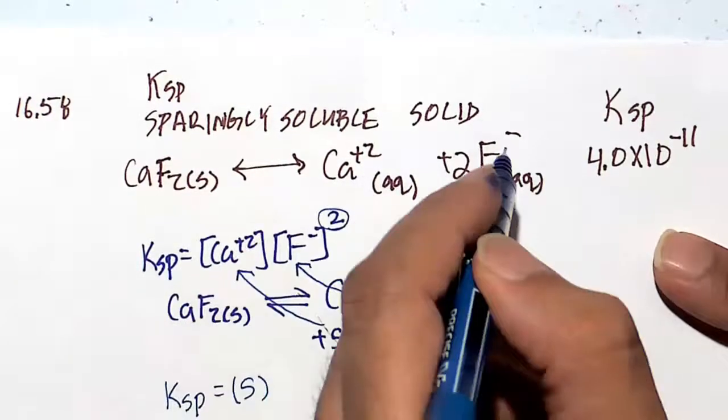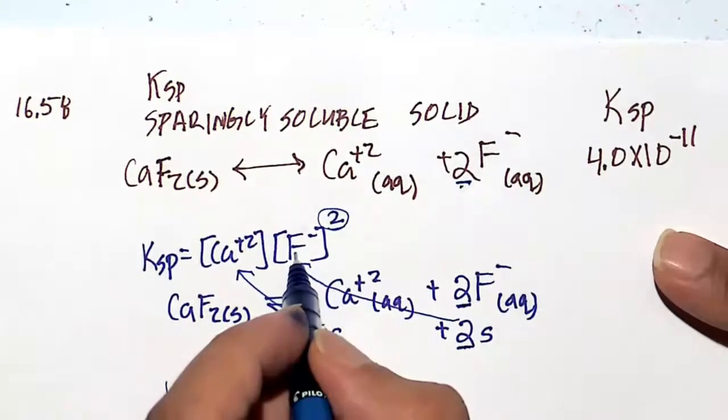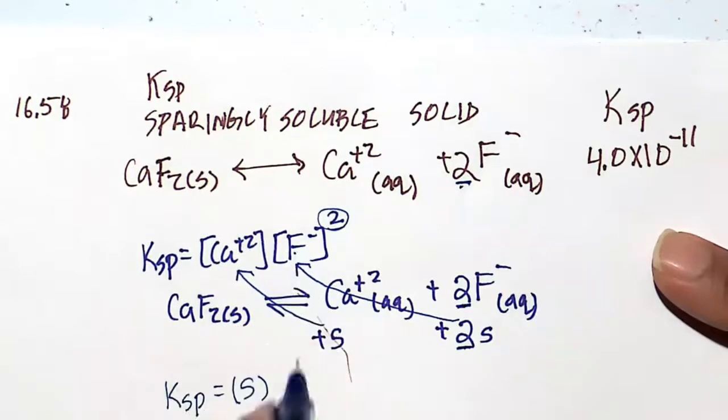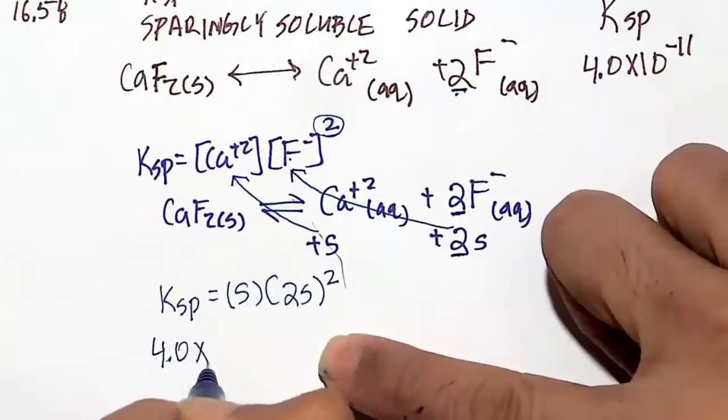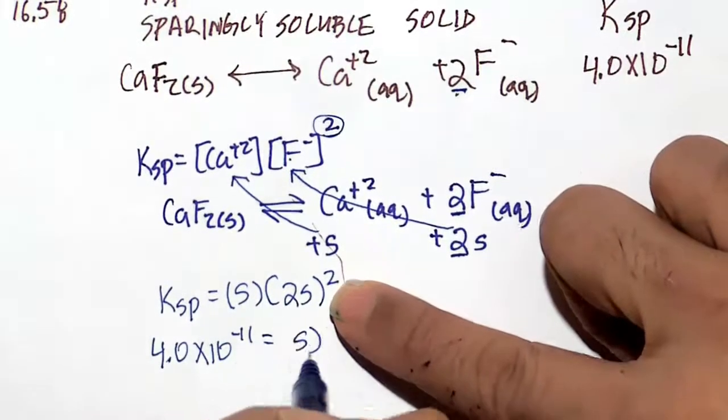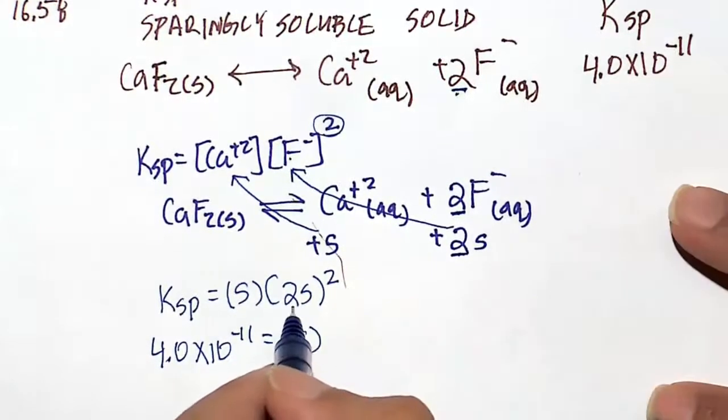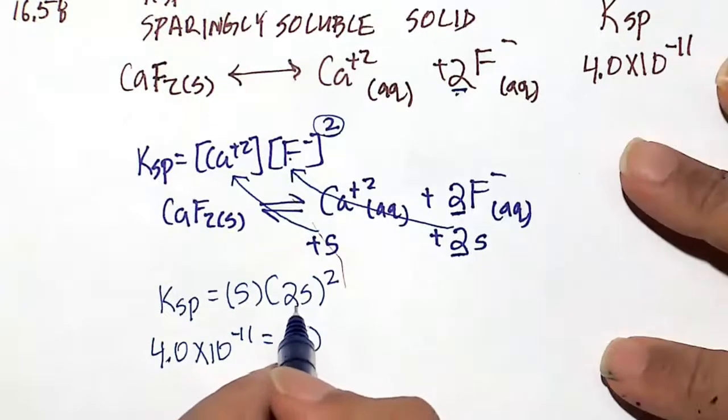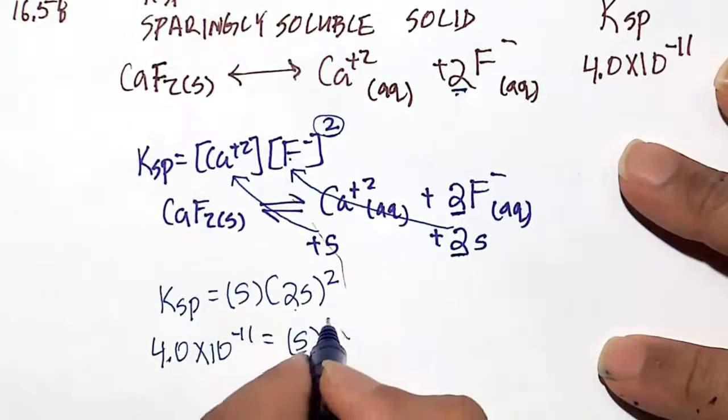So s times 2s whole squared, and 2s whole squared is going to be 4s squared. Ksp here is 4.0 times 10 to the minus 11, and this will be 4s cubed. So we have 4s squared times s would actually be 4s cubed.